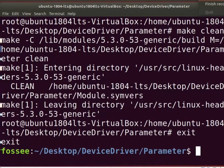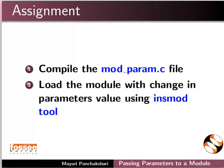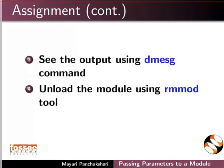With this, we come to the end of this tutorial. Let us summarize. In this tutorial, we learned how to pass parameters to a module. As an assignment, modify the mod_param.c file, load the module with changed parameter values using the insmod tool, see the output using the dmesg command, and unload the module using the rmmod tool.